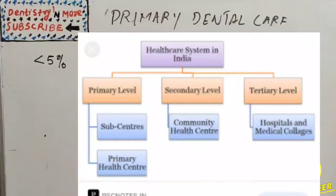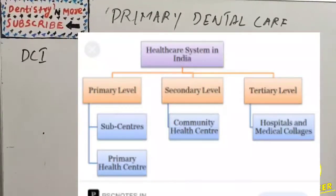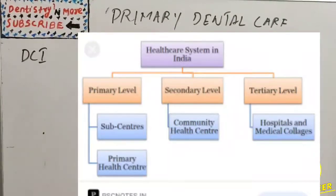The Dental Council of India has put forward an oral health policy suggesting that every primary health center should have a dentist, but this policy is nowhere near implementation. So primary dental care — providing dental care at the grassroots level — is not meeting its objectives in the Indian scenario.